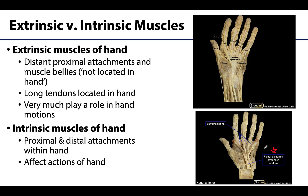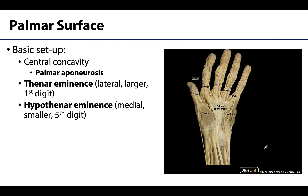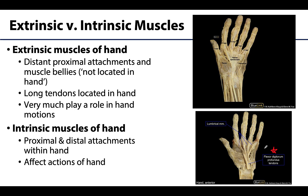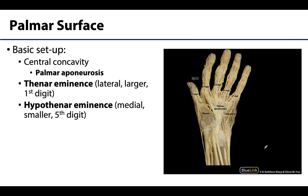Intrinsic muscles, sometimes referred to as short muscles, have both their proximal as well as their distal attachments within the unit it is affecting. When talking about the hand, both attachments are located within the hand. When discussing the muscle compartments of the hand, the most bulk in terms of musculature is on the anterior or palmar side. The posterior side of the hand is almost all tendons from the forearm and the extensor expansions formed primarily by the extensor digitorum tendons.